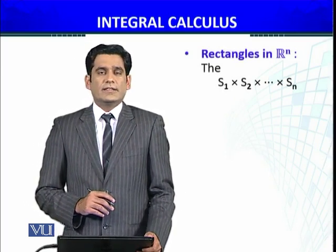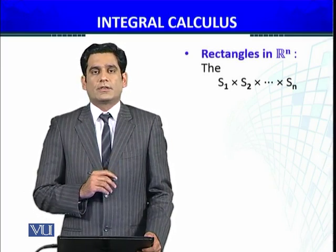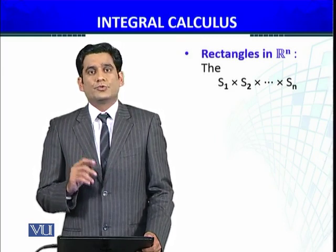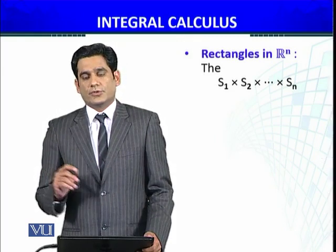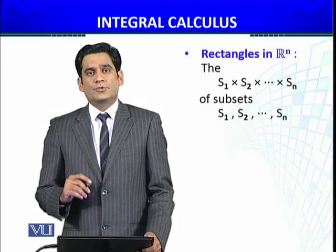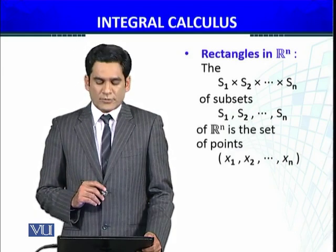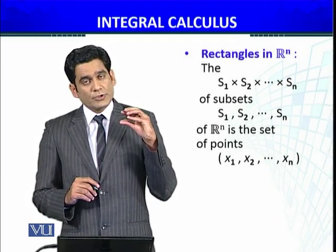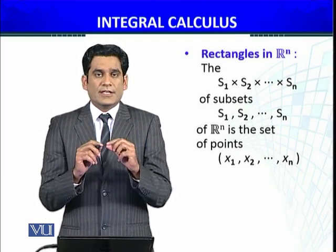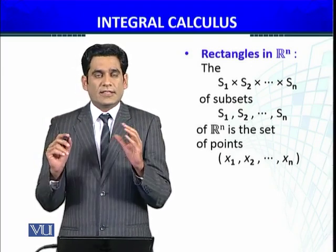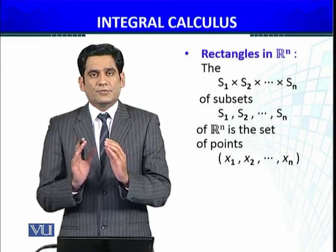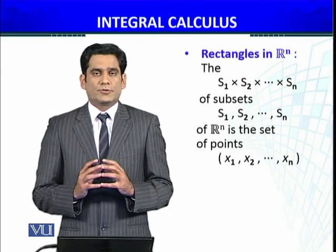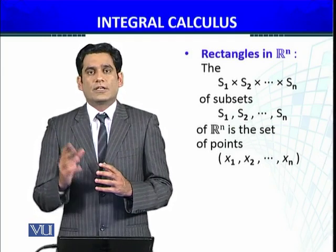So a rectangle in Rn will be the Cartesian product of some subsets S1 × S2 × S3 × … × Sn, where S1, S2, S3, …, Sn are subsets of R (or R2, and so on). Corresponding to these subsets, we call the set S1 × S2 × … × Sn the rectangle, where these sets can be subsets of R, R2, or Rn.